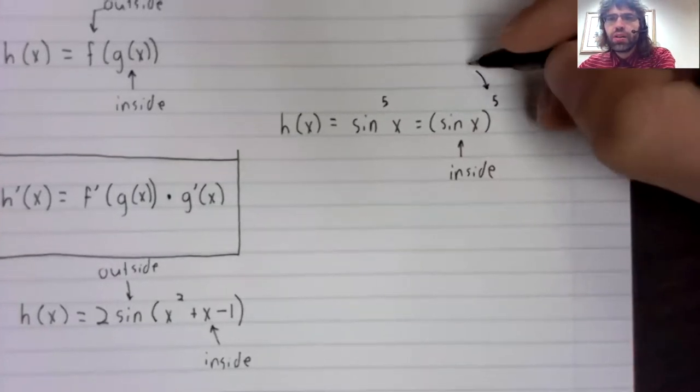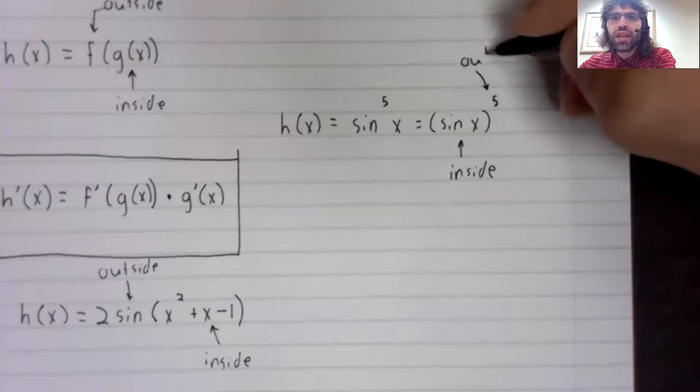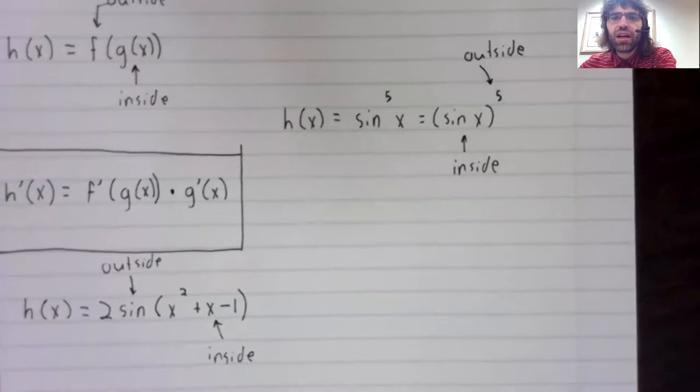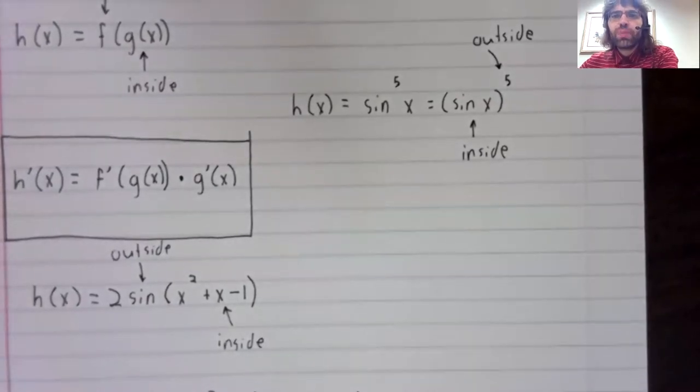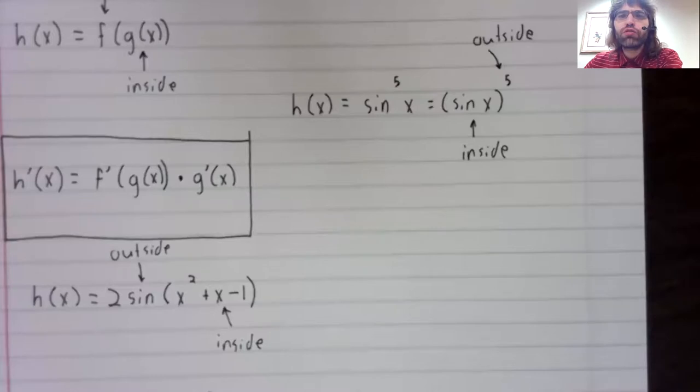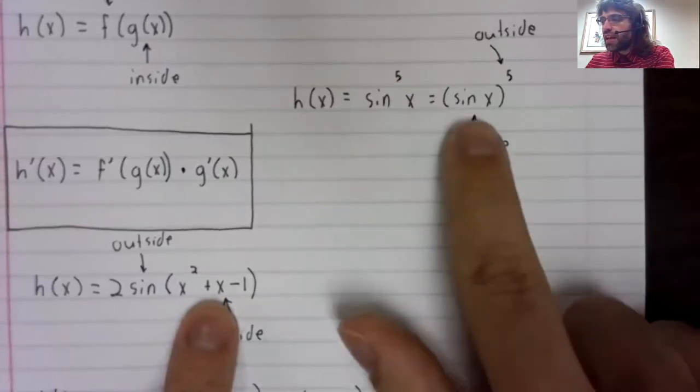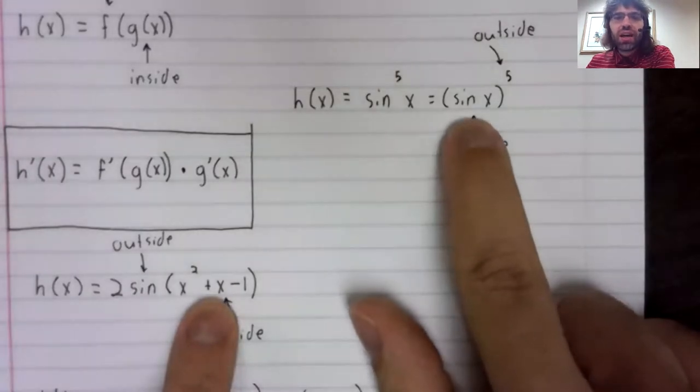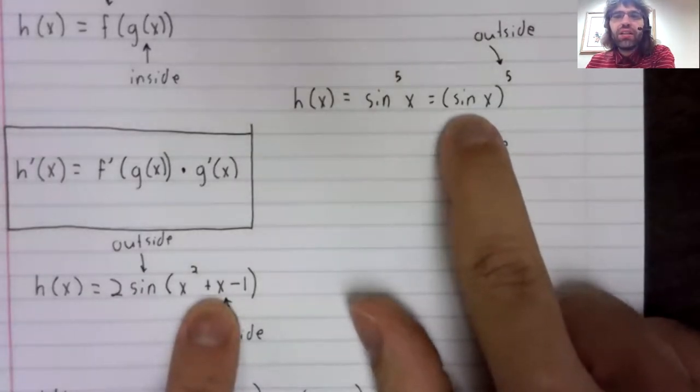The power is outside. The sine is inside. Notice by the way that this terminology outside and inside function tends to be very literal. In both these examples, the inside function is literally inside parentheses.